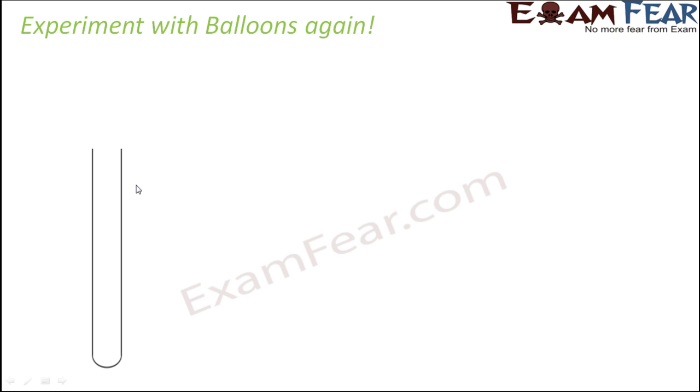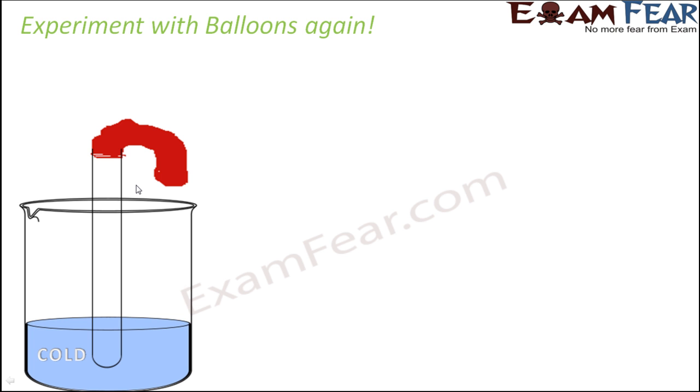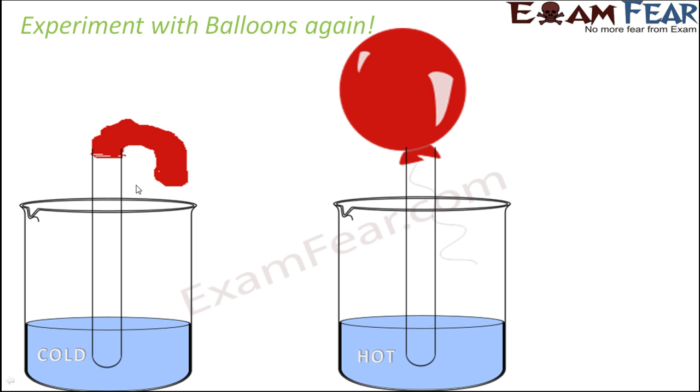Take a test tube or boiling tube from your laboratory. Tie a balloon over the neck of the tube. The balloon is not inflated right now, just tied tightly using a thread to the neck of this test tube. Put this entire tube inside a beaker containing cold water. The balloon remains as it is with no change. Now take the same tube and put it in a beaker containing hot water.